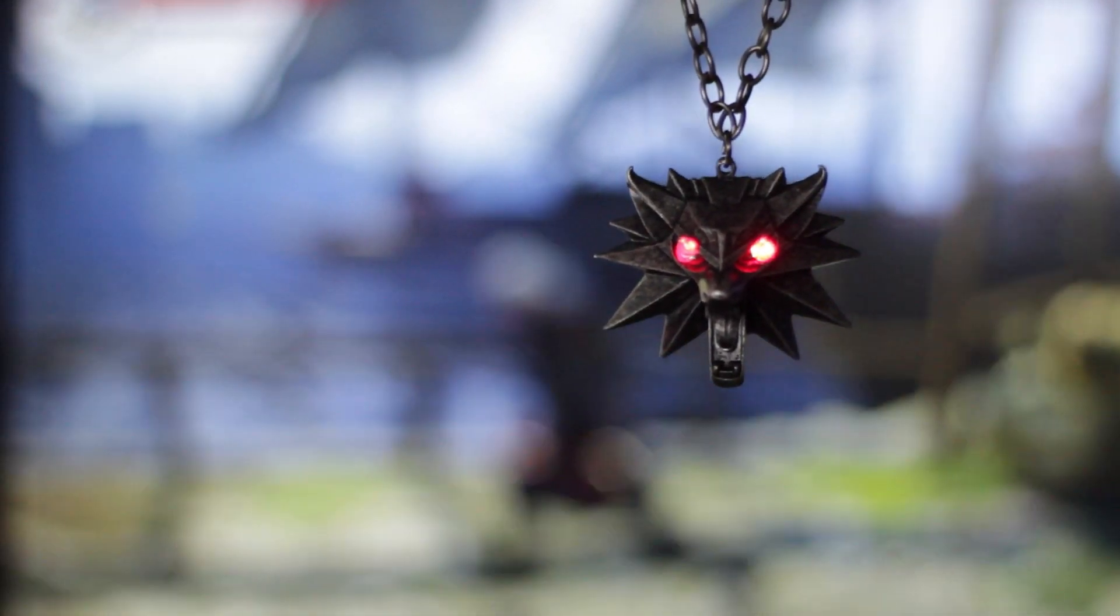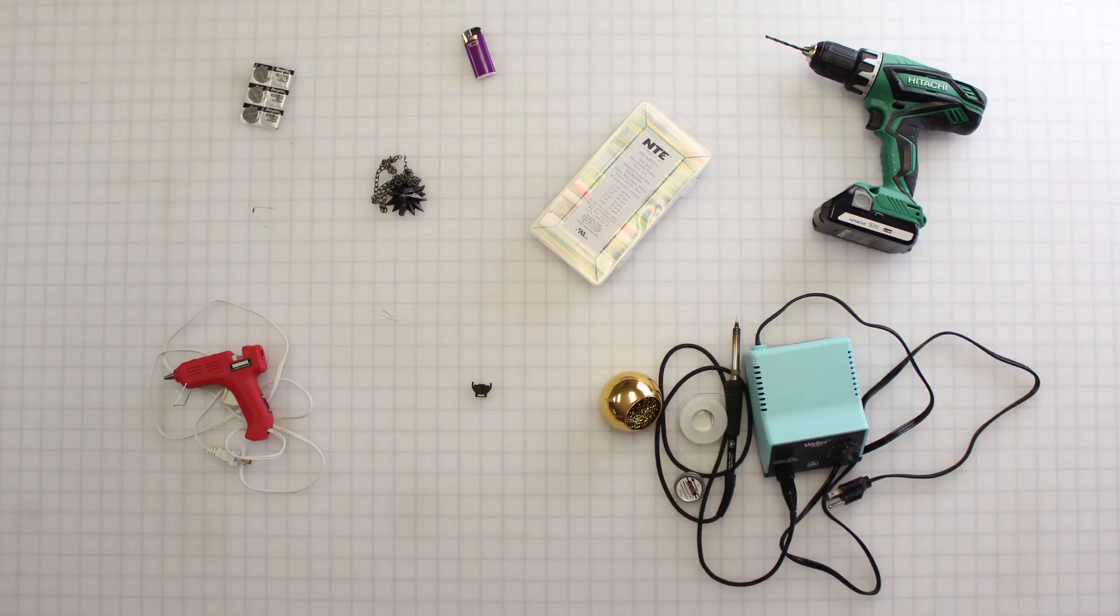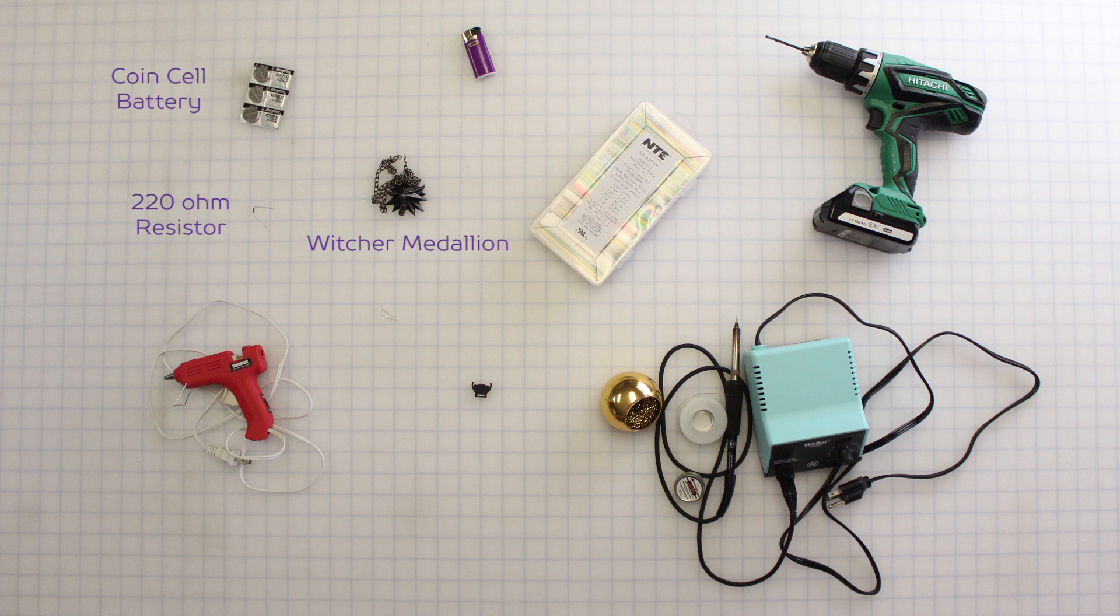Today we're making an LED witcher medallion. To make this project you'll need a replica witcher medallion, a coin cell battery, a 220 ohm resistor, and two three millimeter red LEDs.